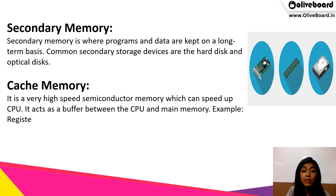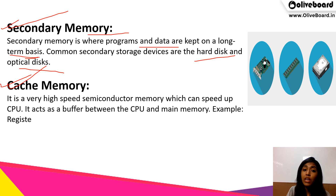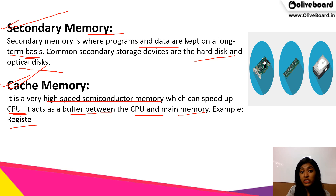When we talk about secondary memory, programs and data can be stored on a long-term basis. Hard disks, pen drives, optical disks, etc. all fall under secondary memory. Then we have cache memory — a very high-speed semiconductor memory which can speed up the central processing unit. It acts as a buffer between the CPU and the main memory. For example, registers.